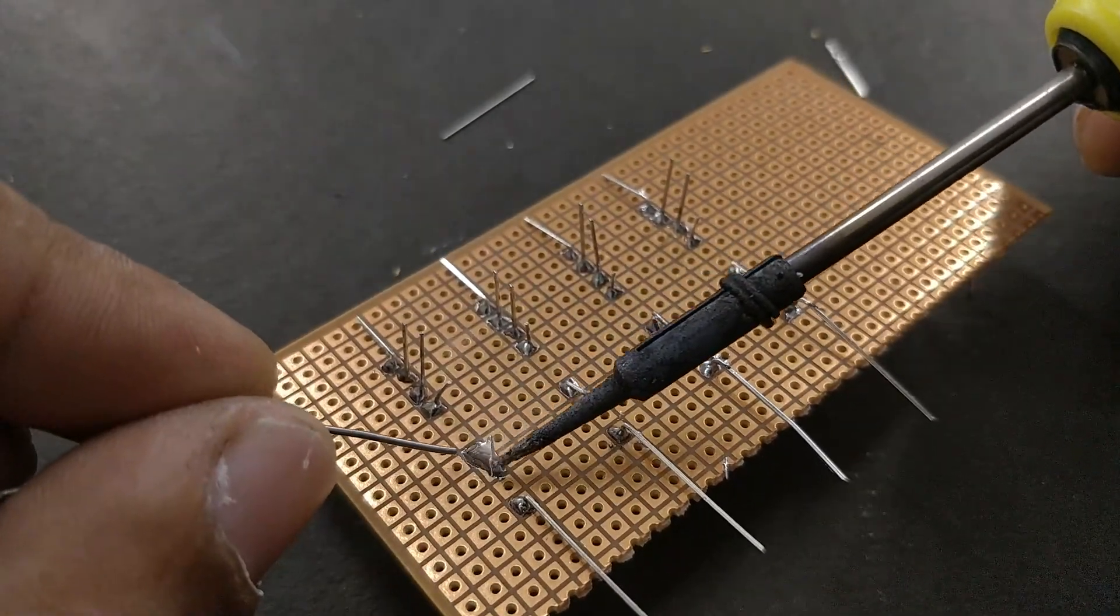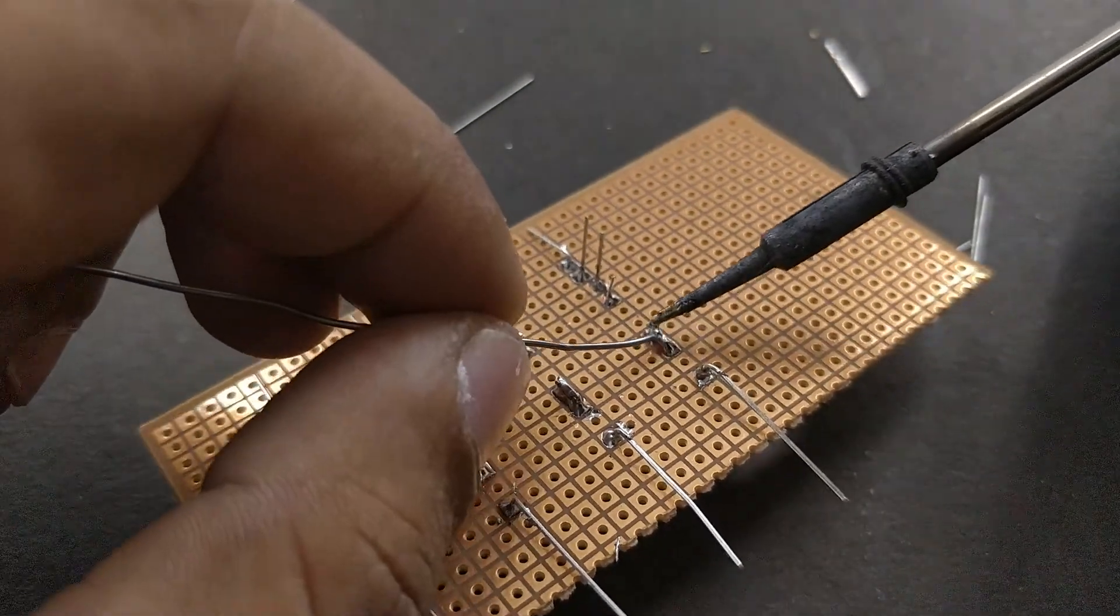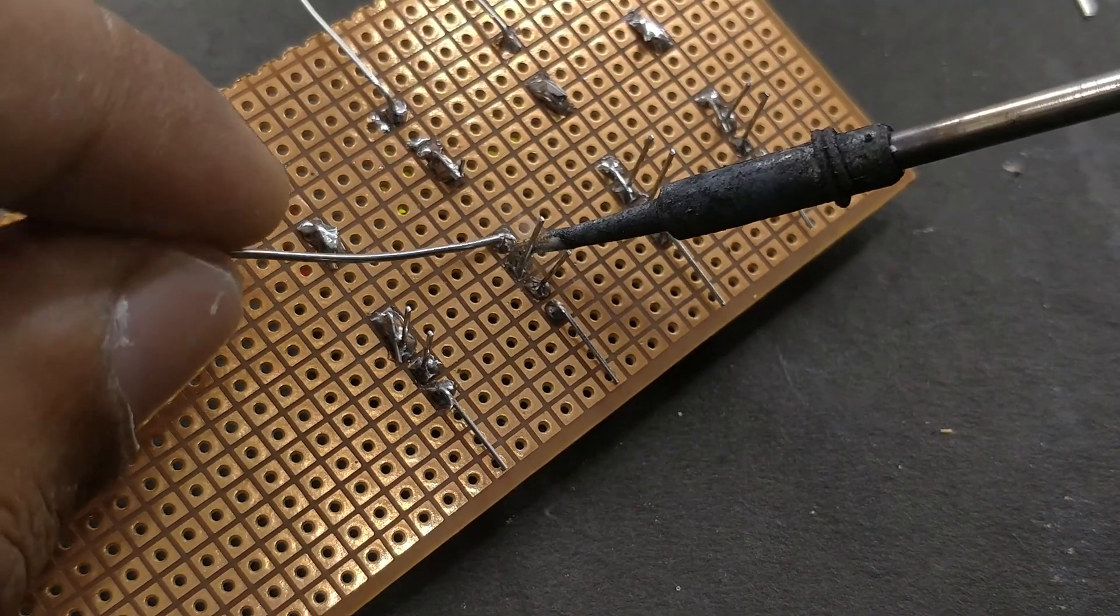So first connect the resistors to the respective negative LED terminals. Then connect the other end of the resistor to the collector pin of the transistor.